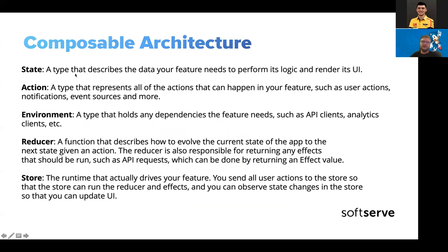On the slide it's pretty much the same as what I described. State describes how the UI will render; action is any action that can come from anywhere — notifications, search, purchasing, and so on. Environment is dependency injection. The reducer handles any action before it goes to the store and can remap it to a new action or change the store if needed.